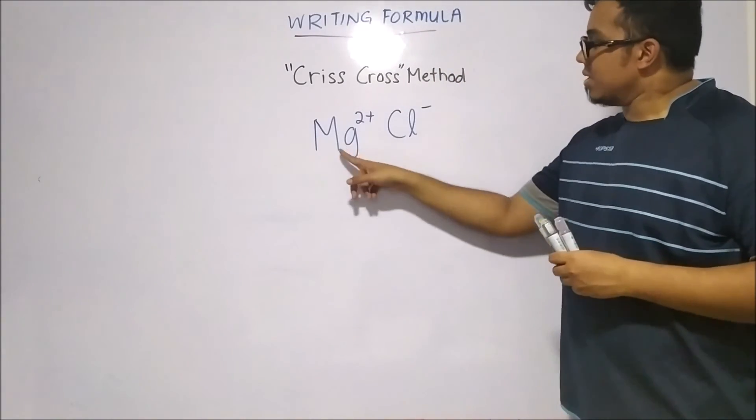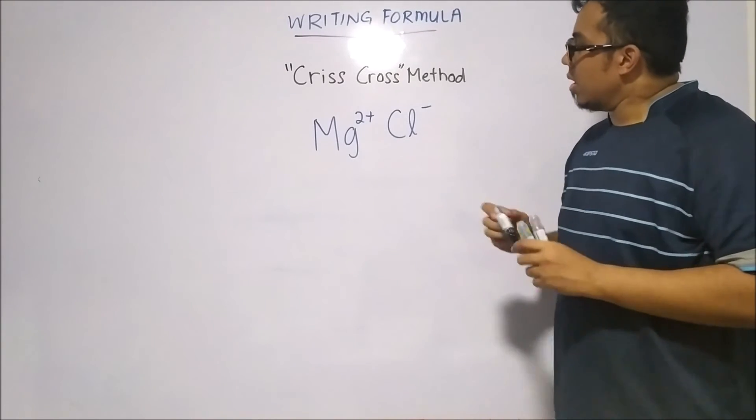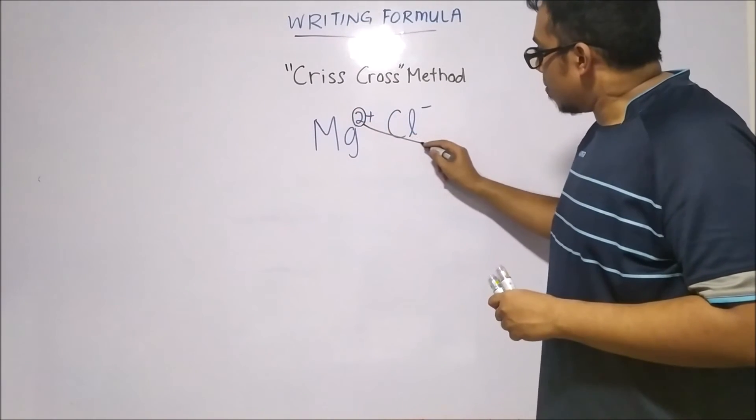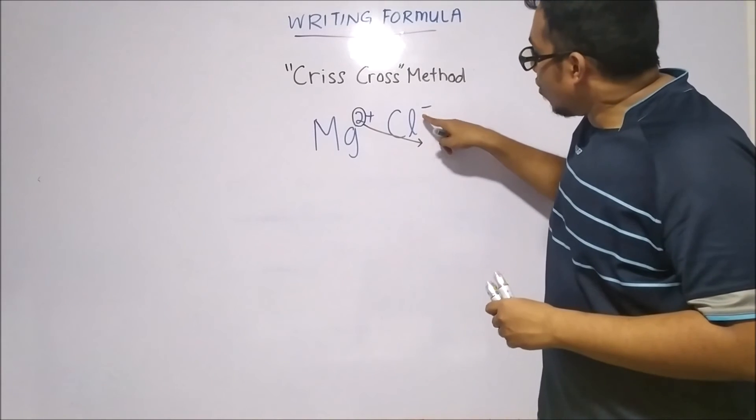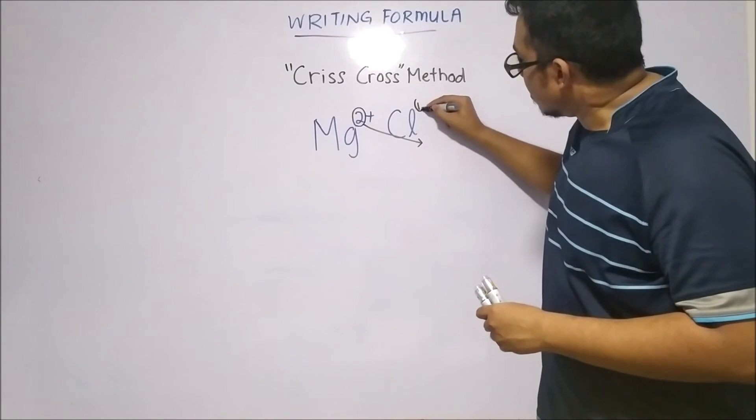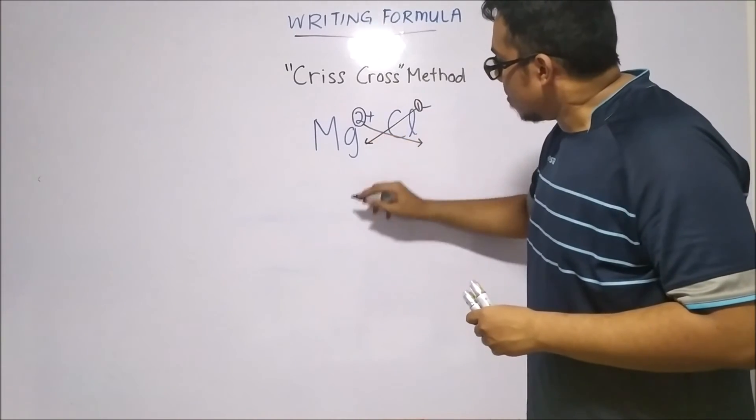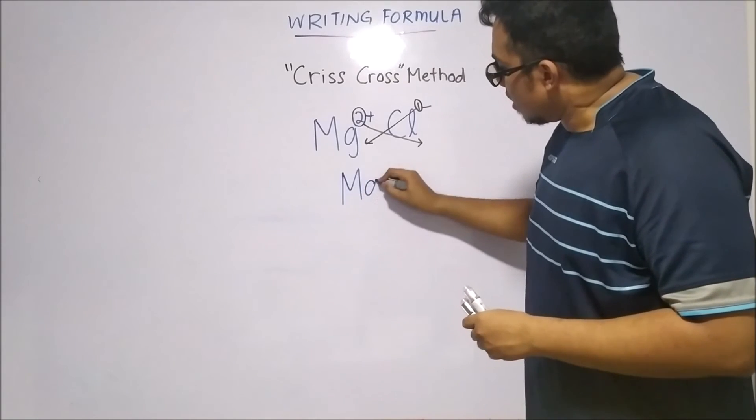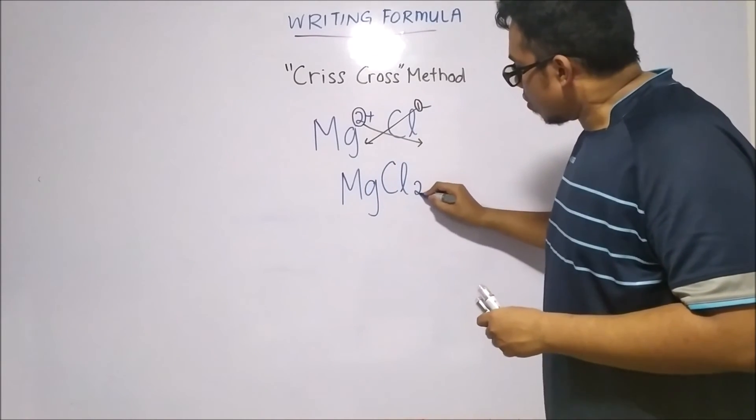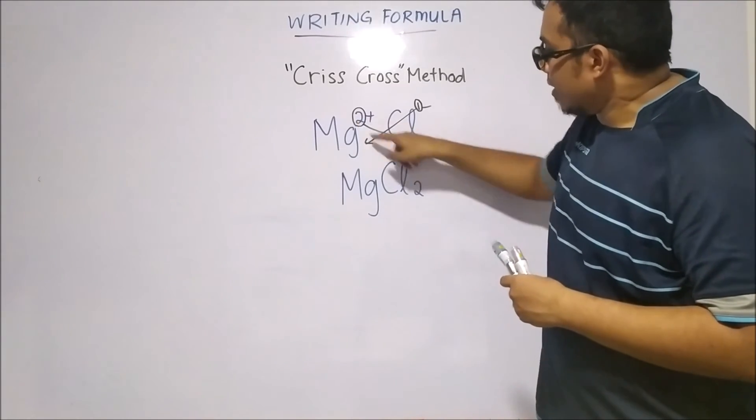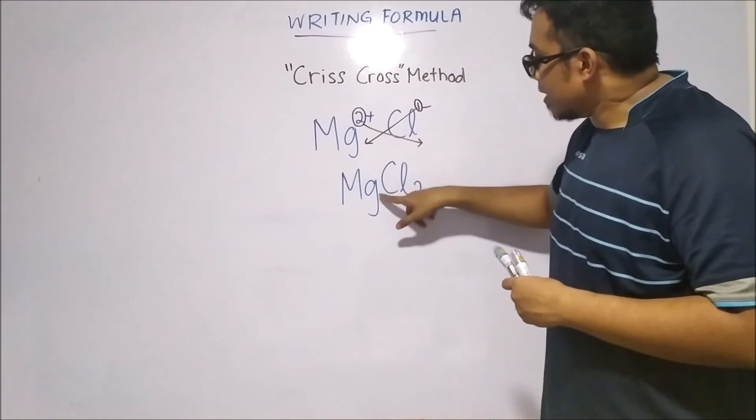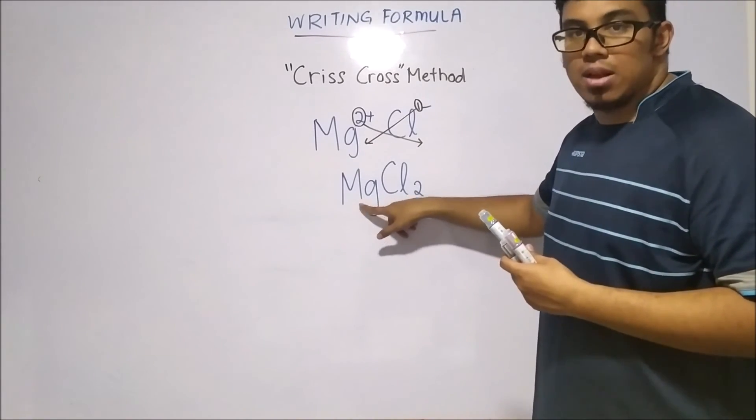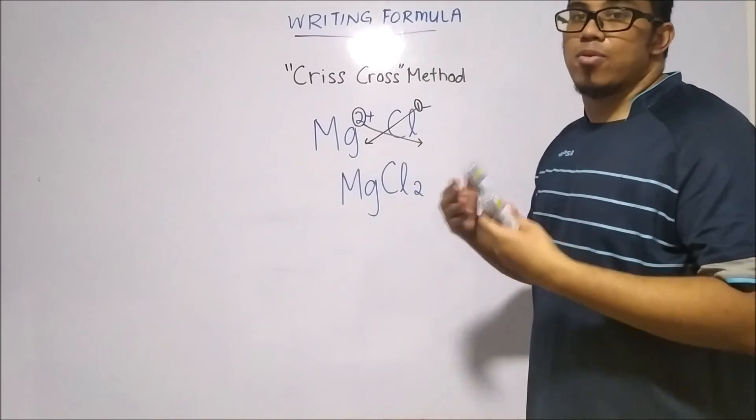Using this example, magnesium 2+ with Cl-. What I will do is, I will take the number 2 from the magnesium, bring it down to the chlorine. And for chlorine, there's actually a number 1 here, which is not shown. And we'll bring it down to the magnesium. And what this gives us, this will give us MgCl2. So you can see that the 2 from the magnesium, we just bring it down. And the 1 from the Cl, we bring it down. So we'll get MgCl2. However, the concept behind writing a chemical formula is still that the charges have to cancel out.